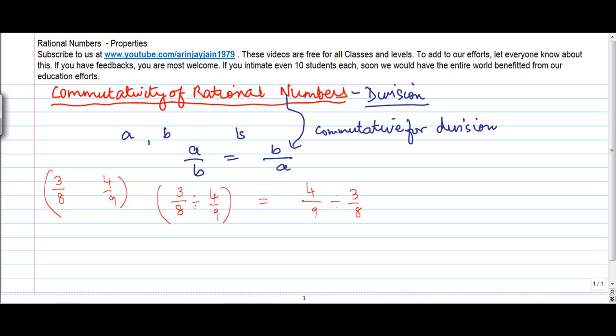Now to solve this equation we know that if you want to divide something by a particular number which is a fraction, you can change this division sign to multiplication but reverse the order. You make denominator the numerator and numerator the denominator. So 3 by 8 into 9 by 4. This will give us 27 by 32.